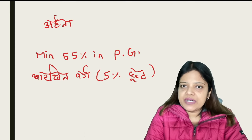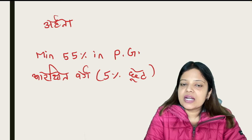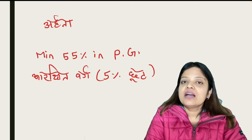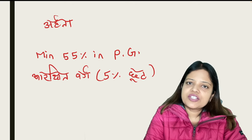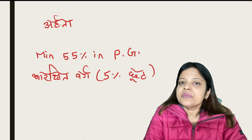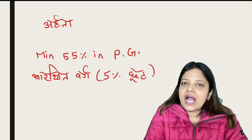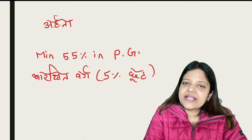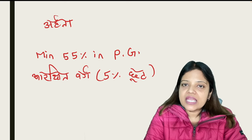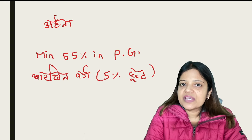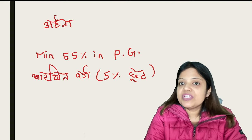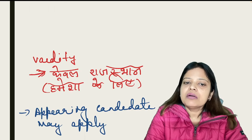Eligibility ke baare mein: minimum 55% marks post-graduation mein hone chahiye, aur aarakshit varg ko 5% ki choot di gayi hai. Ek important baat — agar aap appearing candidate hain ya final year mein hain, aapne exam de diya hai ya de rahe hain, toh bhi aap is exam mein appear ho sakte hain. Lekin jab aapka SET result aaye, tab tak aapka PG result bhi aapke paas hona chahiye.